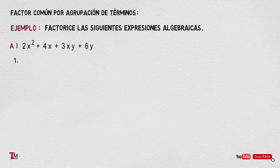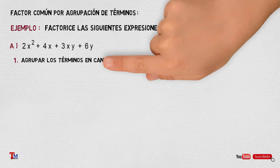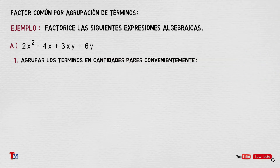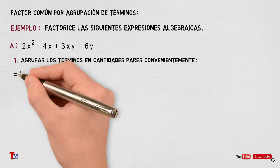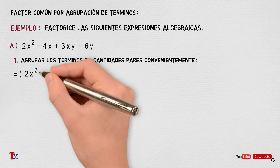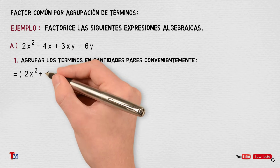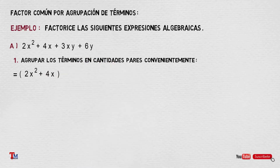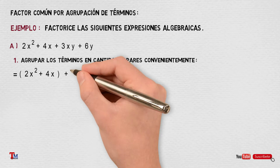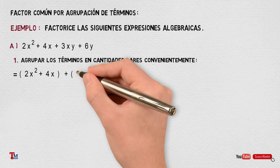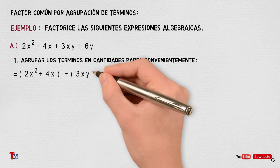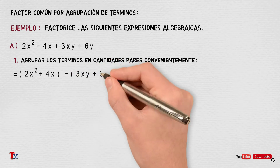Paso número 1: Agrupar los términos en cantidades pares convenientemente. En este caso, agruparemos 2x² y 4x, y 3xy y 6y.